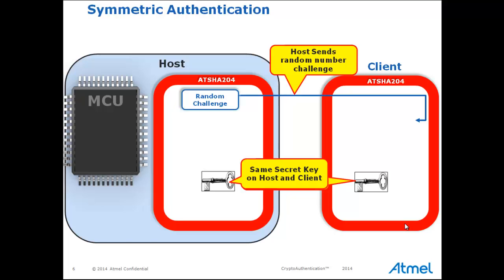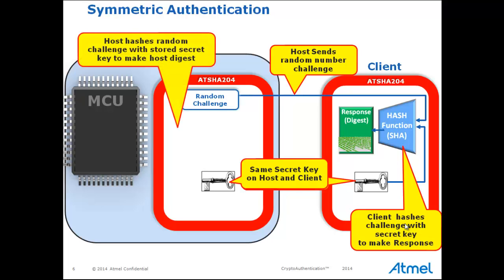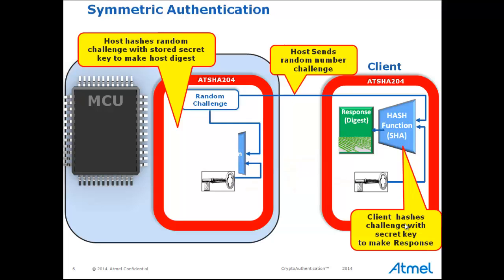The client receives the random number challenge and runs it through a hash algorithm using the secret key stored there. The result of the hashing function is called the response — it is also called a message authentication code, or MAC. The response is then sent to the host. The host internally runs the same challenge number — that is, the random number — through a hash algorithm using the secret key stored on the host side to get the host digest.